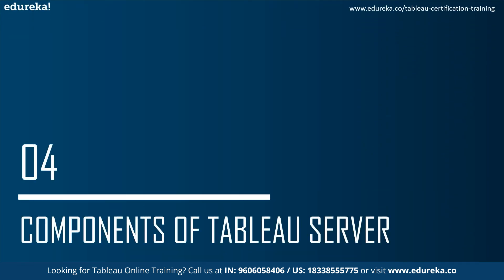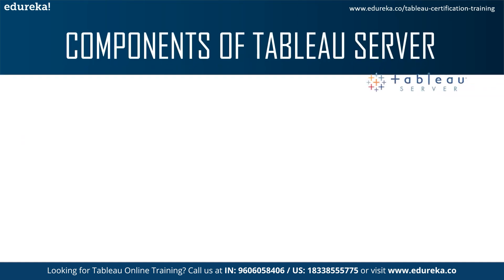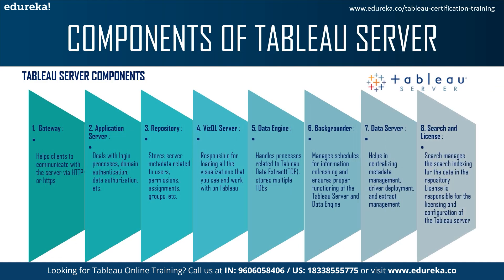Next, let's look into the components of Tableau Server. There are eight components in total. The first is Gateway — a kind of web server that helps clients communicate to the server via HTTPS. The server receives incoming client requests and directs them to the appropriate server for action. A gateway handles processes such as load balancing, traffic routing, URL rewriting, serving static files to clients, and serving multi-thread processes.